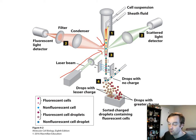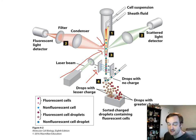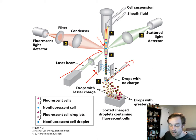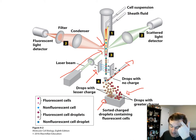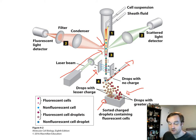Each droplet obtains a negative electric charge proportional to the amount of fluorescence the cell is giving off. Once charged, droplets pass through an electric field and are differentially deflected based on their charge into different bins. Droplets with no charge are sorted out, those with a lesser charge go into one bin, and those with a greater charge go into another. This results in a monoculture of sorted cells, all of the same type.